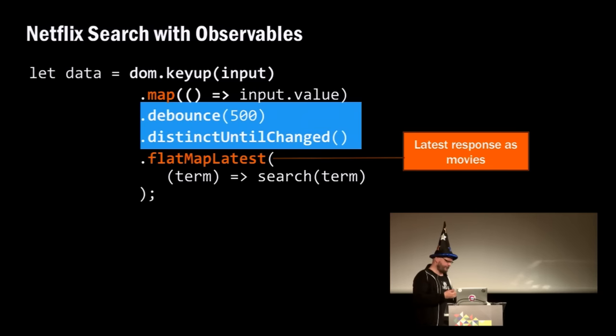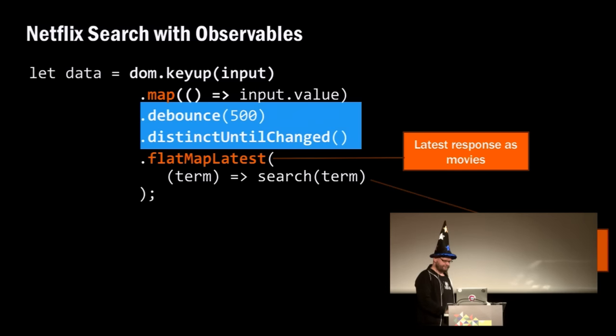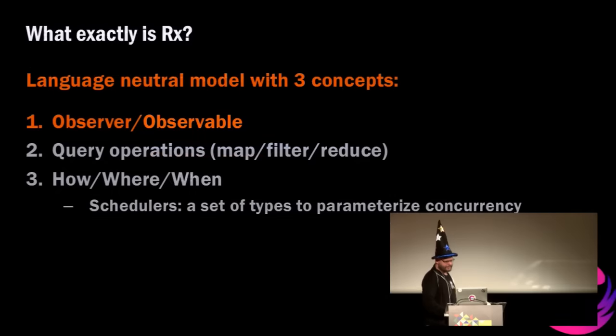For Netflix search autocomplete: take the key-up events, get the value, debounce it so we don't send everything to the server at once, then get the latest term. With flatMapLatest, out-of-order responses are not possible — we cancel the previous request and only the current request is valid. Then we call forEach and bind it directly to the UI.